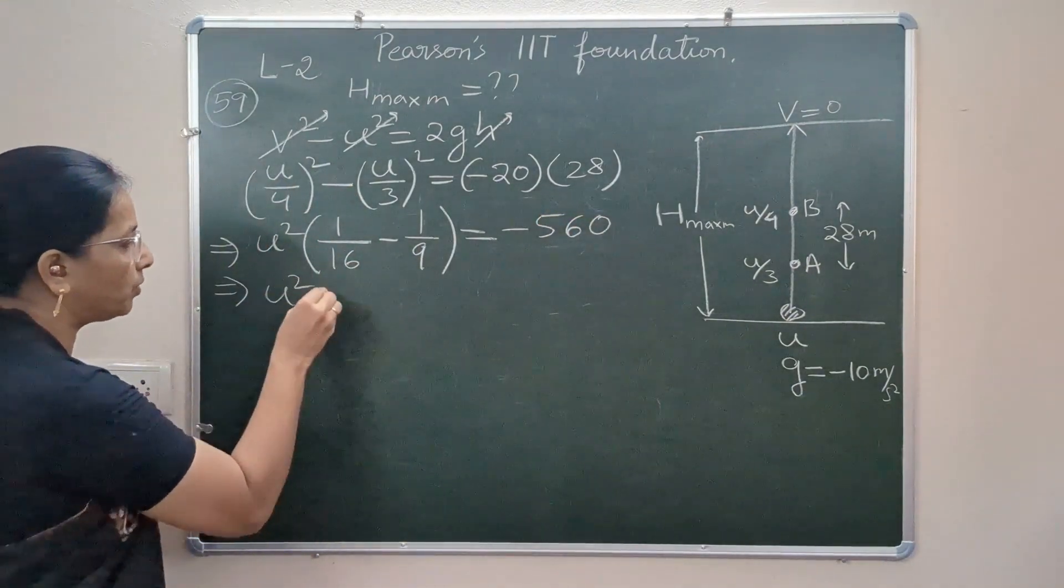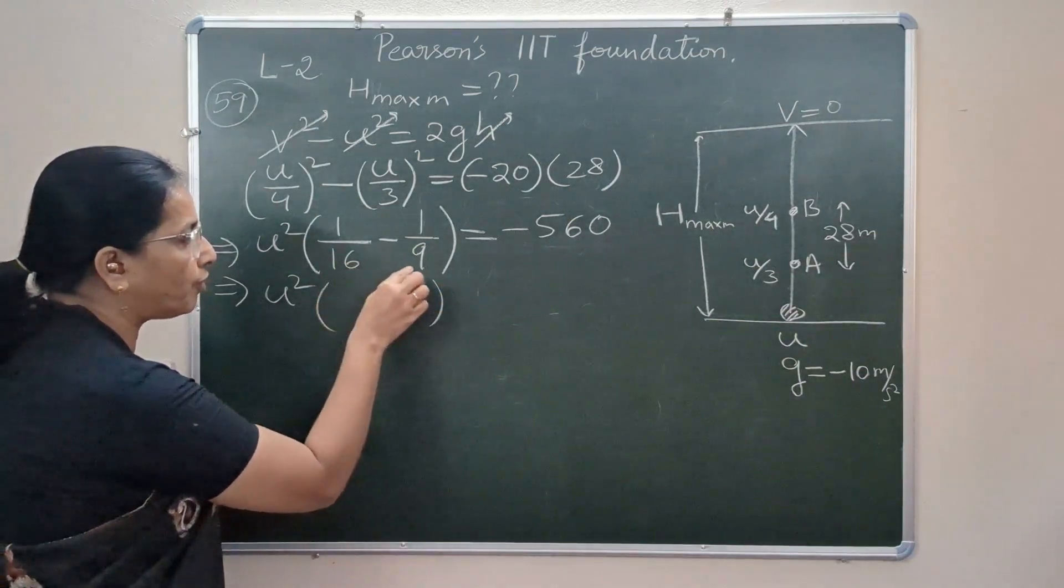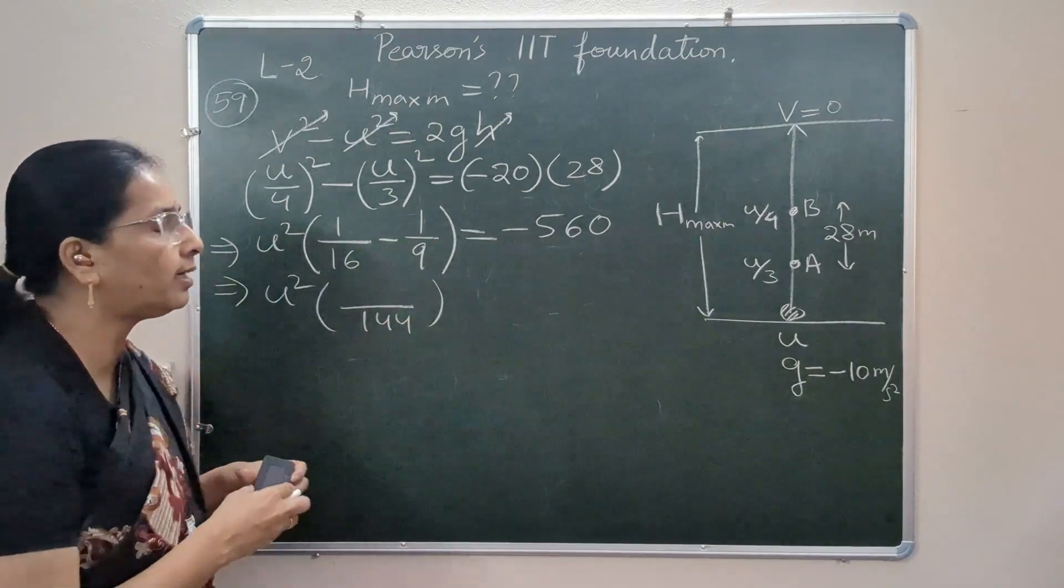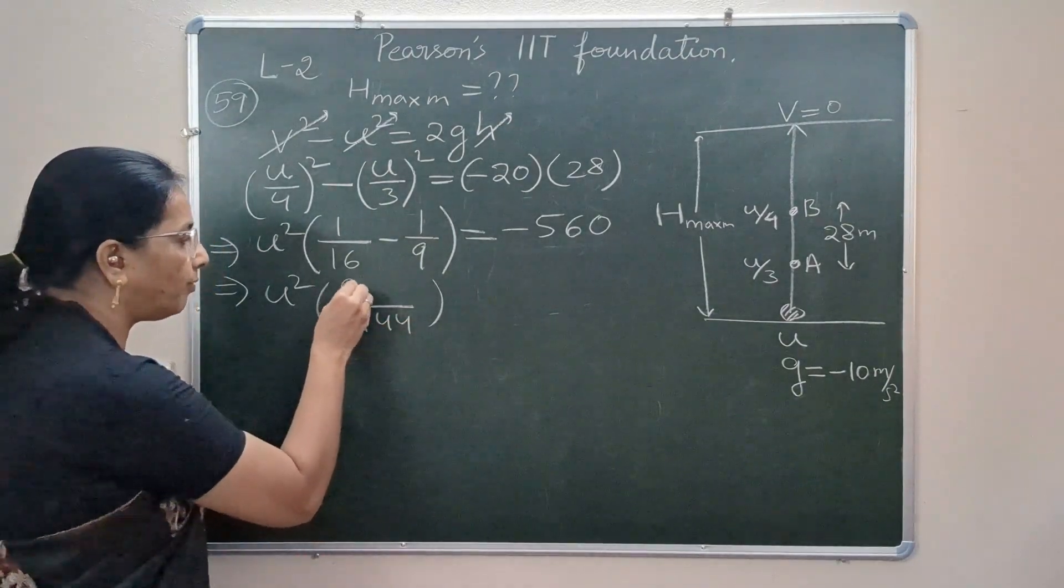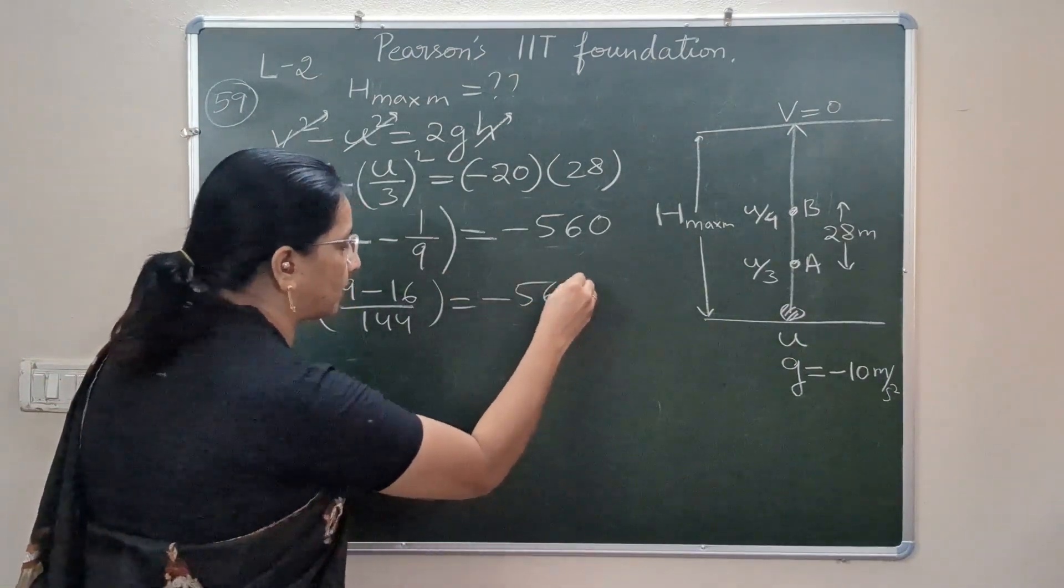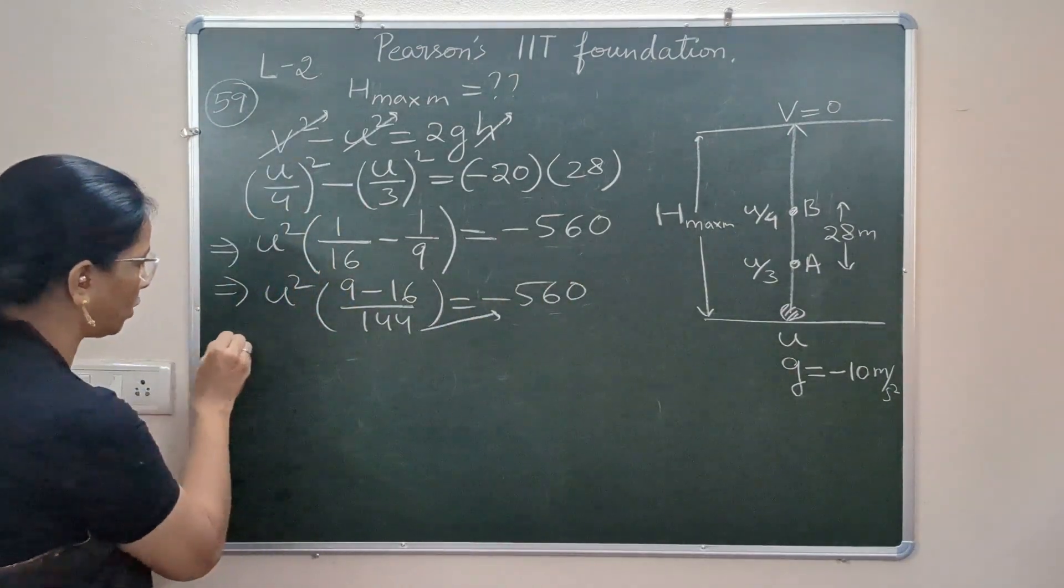This on further solving: u² times LCM of 16 and 9. These are prime to each other, so LCM is their product. And then we have here minus 9 minus 16 and this is minus 560. We go for a simple cross multiplication also.